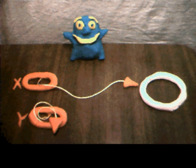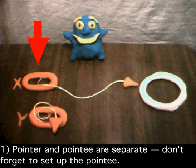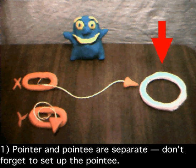Number one, the basic structure is that you have a pointer, and it points over to a pointee. But the pointer and pointee are separate, and the common error is to set up a pointer, but to forget to give it a pointee.